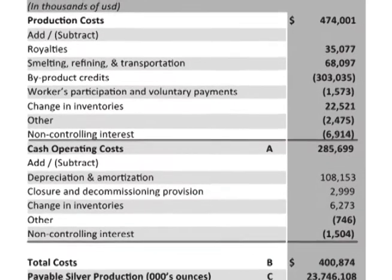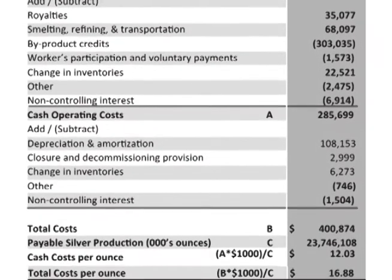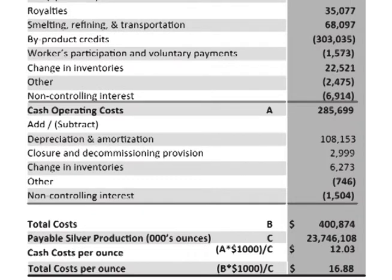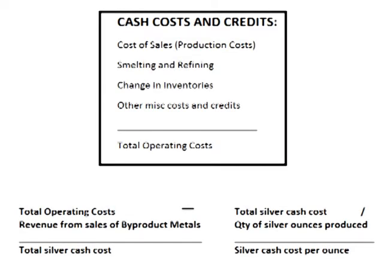For 2012, Pan Am's cash cost and total costs are provided in the annual report. Pan Am's cash cost in 2012 was $12.03 per ounce. Cash cost includes production costs, smelting and refining costs, changes in inventories, and other miscellaneous expenses, as well as the revenue from the production of by-product metals.